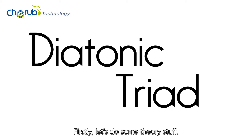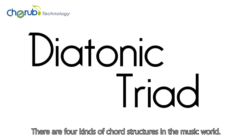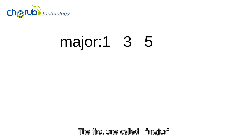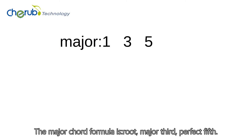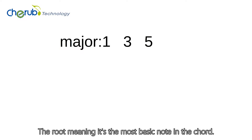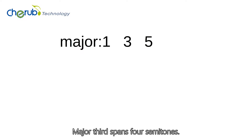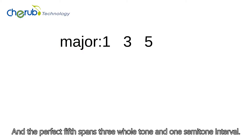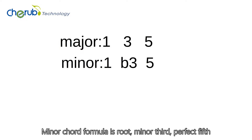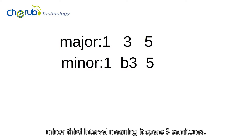First, let's cover some theory. There are four kinds of chord structures in the music world. The first is the major chord. The major chord formula is root, major third, perfect fifth. The root is the most basic note in the chord. The major third spans four semitones, and the perfect fifth spans three whole tones and one semitone. The minor chord formula is root, minor third, perfect fifth. The minor third interval spans three semitones.